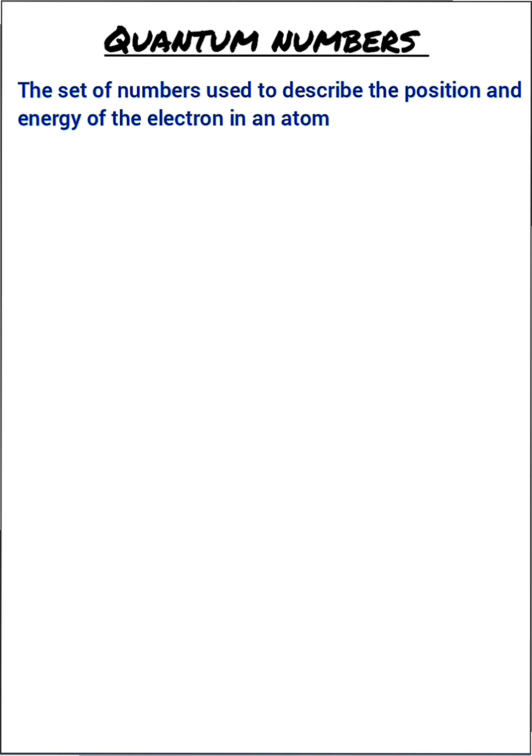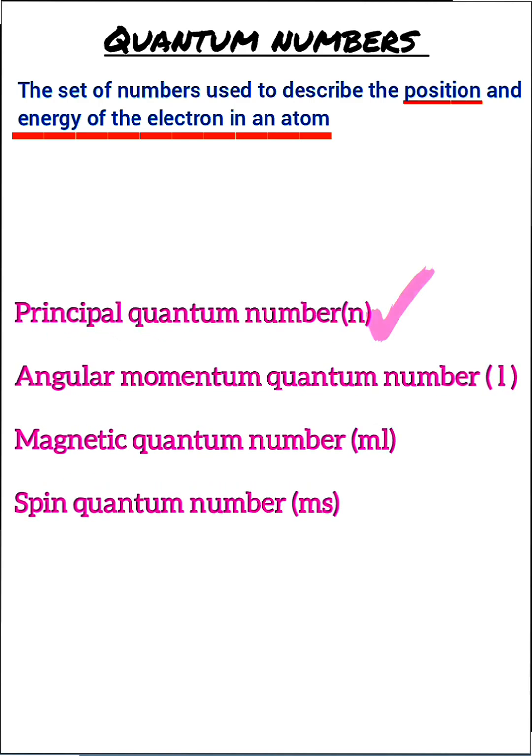Now let's move on to the topic. Quantum numbers are the set of numbers used to describe the position and energy of an electron inside the atom — they tell you the address of an electron inside the atom. Every electron has a unique set of four quantum numbers, based on the Pauli exclusion principle.